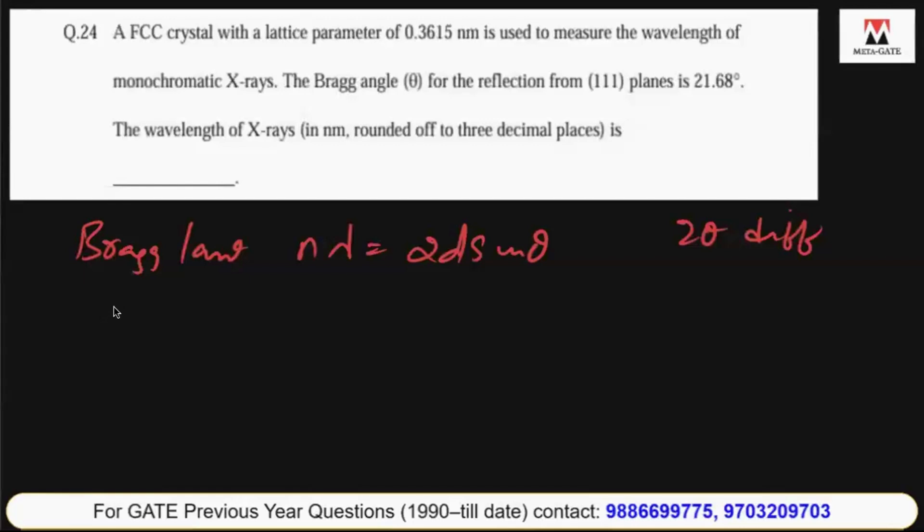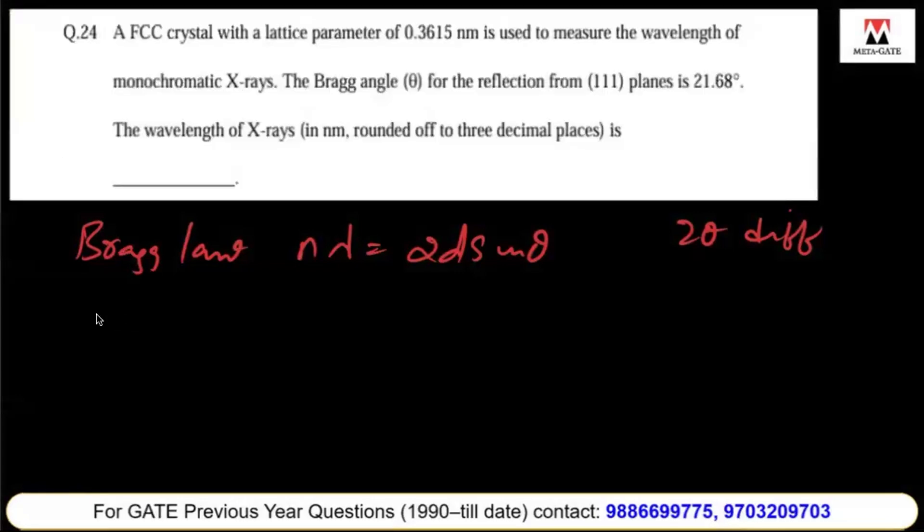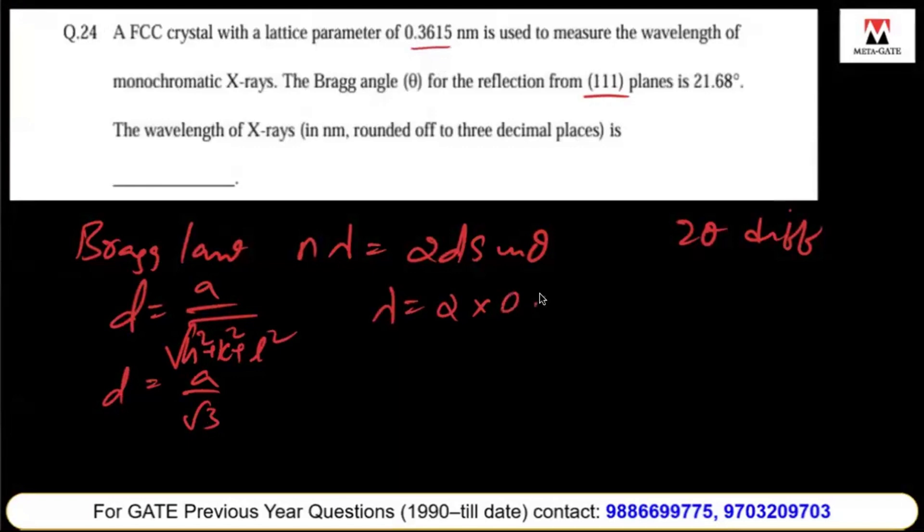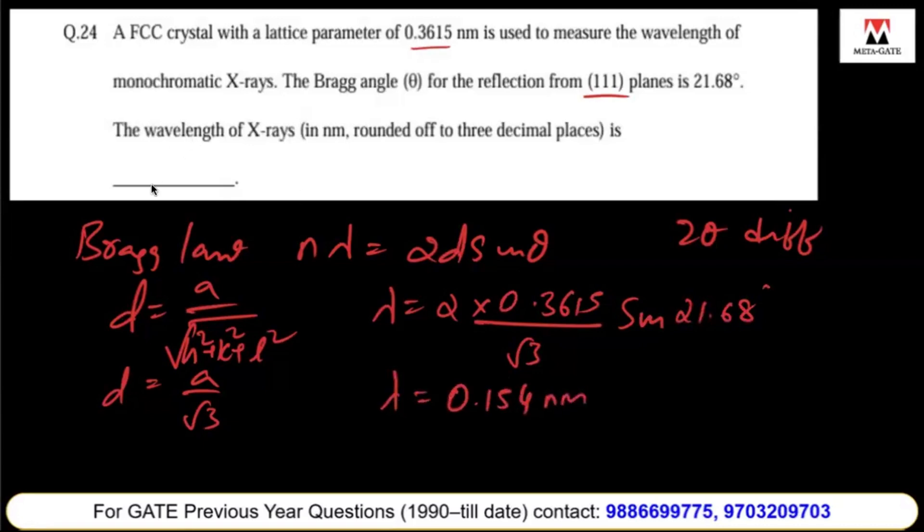Here, d equals a divided by the square root of h squared plus k squared plus l squared. For (111) planes, d equals a divided by root 3. So lambda equals 2 times a (0.3615) divided by root 3 times sin 21.68. Let's calculate the value. Lambda equals 0.154 nanometers, so the answer is 0.154.